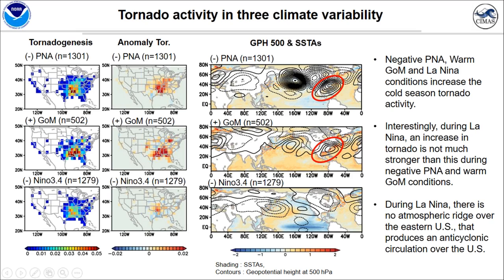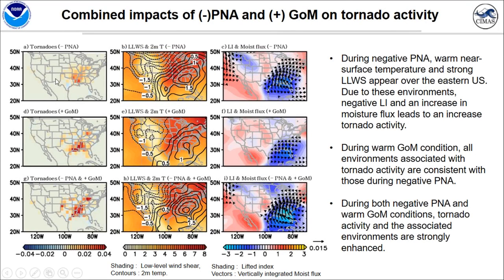This atmospheric ridge over the eastern U.S. leads to the jet stream shifting northward. However, during the La Niña case, there is no atmospheric ridge over the eastern U.S. — instead there is anticyclonic circulation over the U.S. So according to this result, the La Niña condition may not affect generating a negative PNA-like pattern much. This result suggests that the negative PNA-like pattern is the most important factor for increasing tornado activity. So we focus on the negative PNA and warm Gulf of Mexico cases.